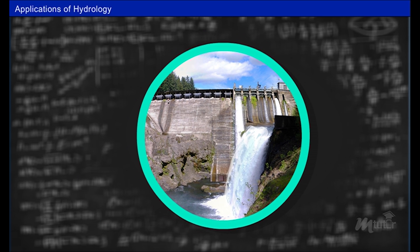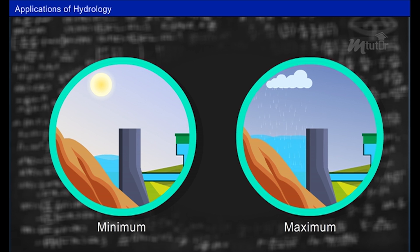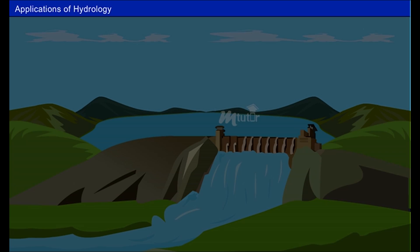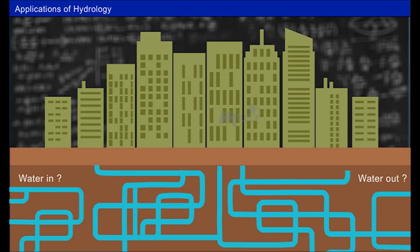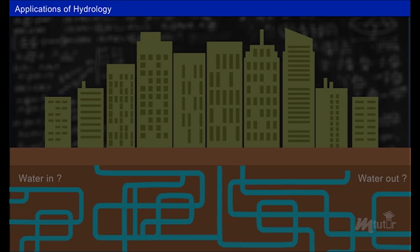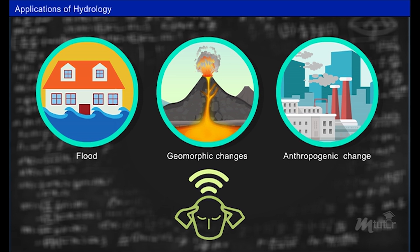To understand the safe disposal of excess water in structures. To calculate the minimum and maximum availability of water in the particular area at different climatic conditions. To determine the expected flood flow over the spillway of the structures. To determine water balance for the particular area. To predict flood, geomorphic changes, anthropogenic environmental change etc. and much more.